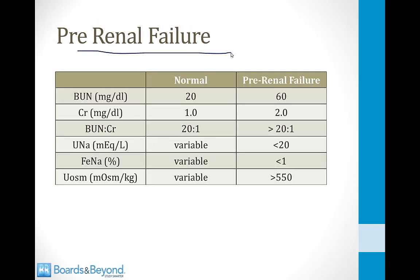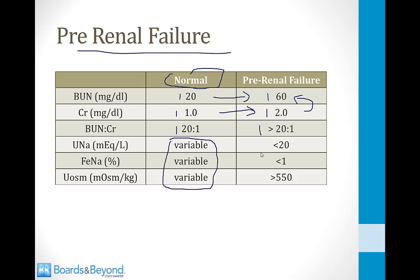For example, a normal patient has BUN of 20, creatinine of 1, and a 20:1 ratio. In pre-renal failure, BUN may rise to 60 while creatinine rises to only 2, giving a ratio greater than 20:1 — the BUN tripled while creatinine only doubled due to water reabsorption pulling BUN along. Urinary sodium will be less than 20, FENA less than 1%, and urinary osmolarity over 550.